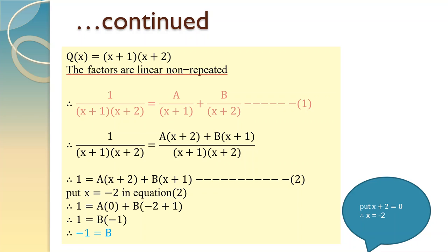Now do cross multiplication on the right hand side. So we have A into x plus 2 plus B into x plus 1 upon x plus 1 into x plus 2. Observe the right hand side and left hand side — both of them have the same denominator, so they will get cancelled. And we get 1 equal to A into x plus 2 plus B into x plus 1.